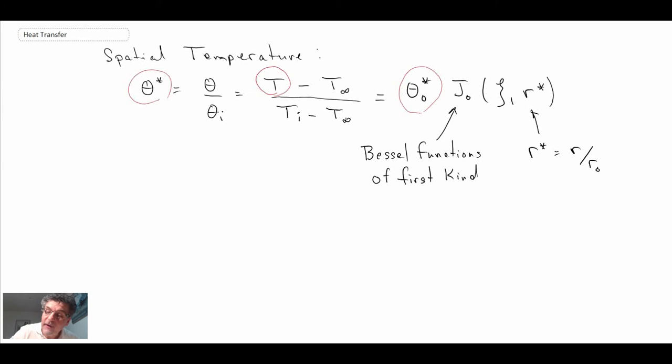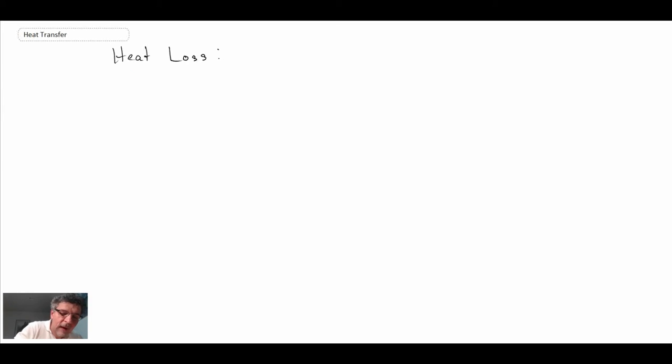Let's take a look at heat loss. Heat loss is Q divided by Q naught. And I'll give you Q naught in a second. Again, this is a Bessel function evaluated at zeta 1. And Q naught...